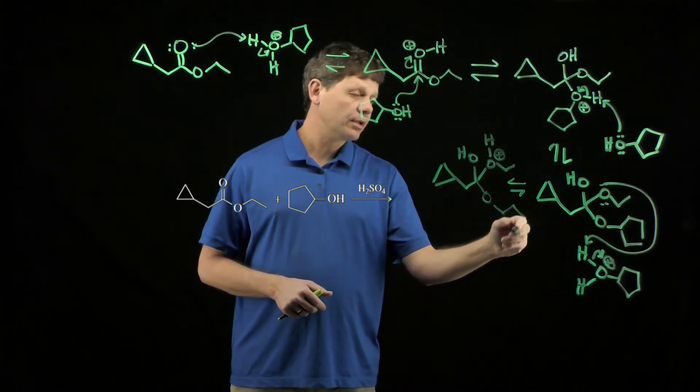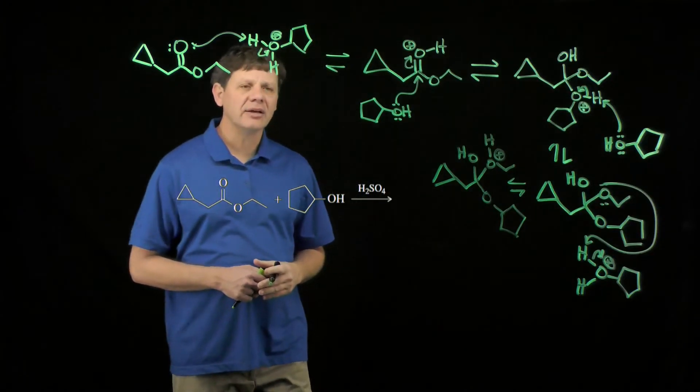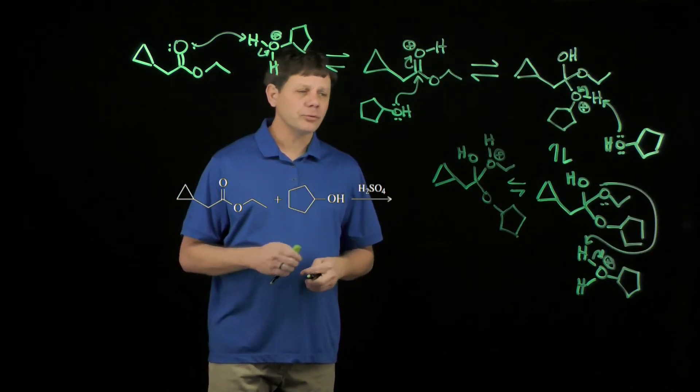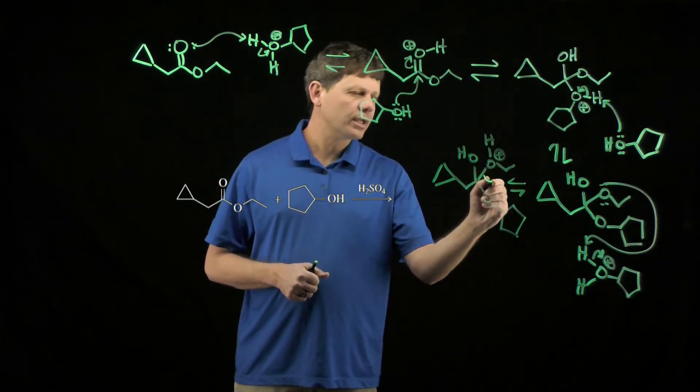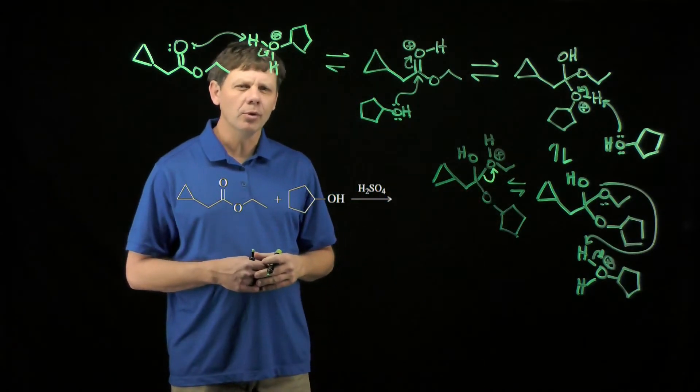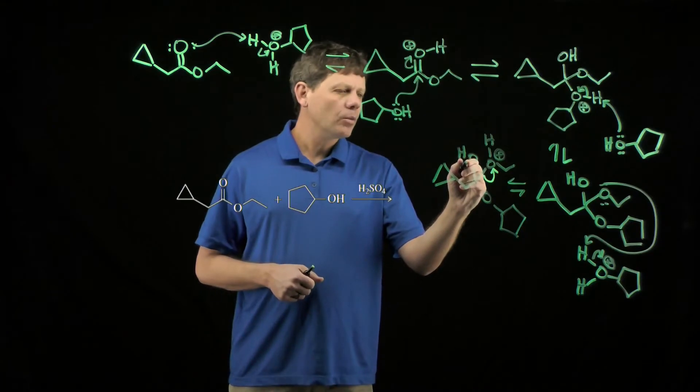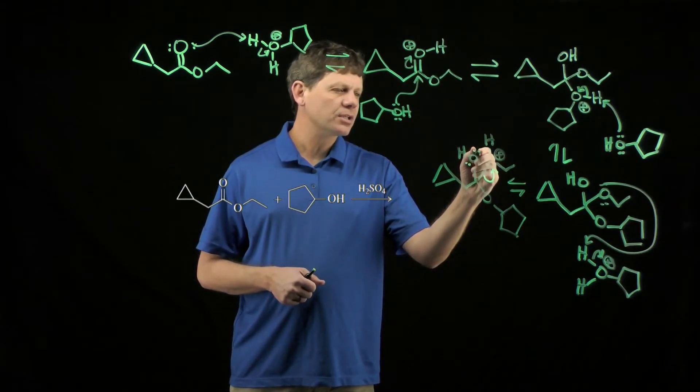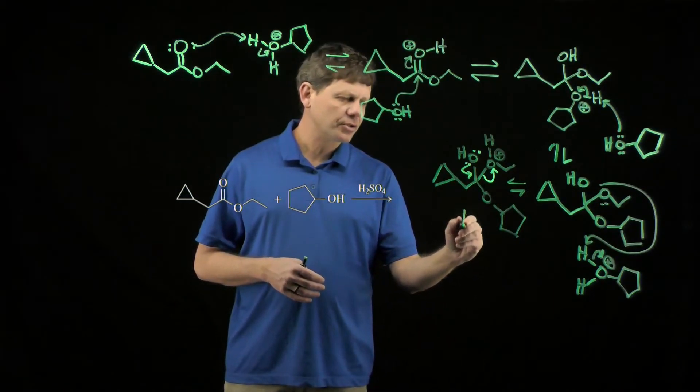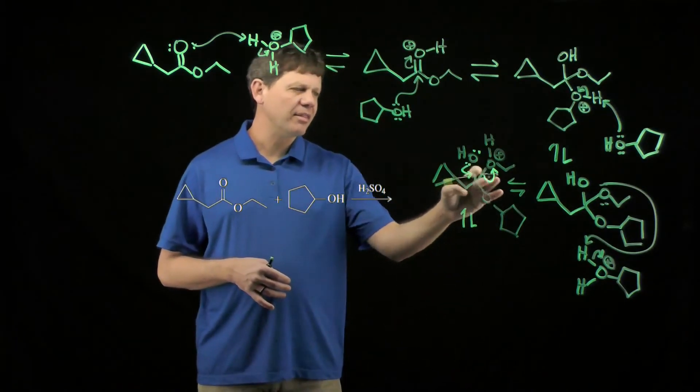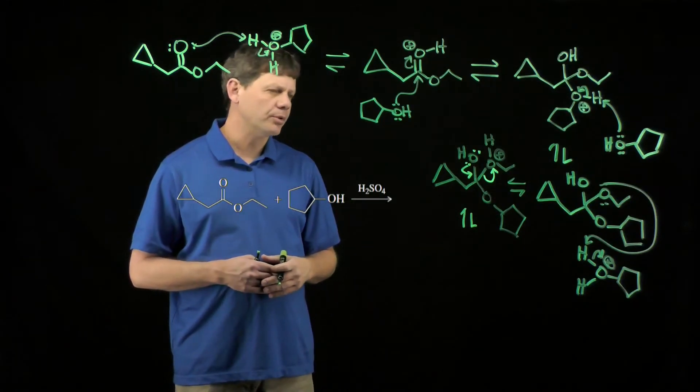That ethoxy group is now an excellent leaving group. What do good leaving groups or excellent leaving groups do? They leave. And so we can show that being removed. And in fact, if we want, we can go ahead and use the oxygen lone pair to help push that out, essentially drawing the resonance structure of the carbocation that that group leaving will produce.